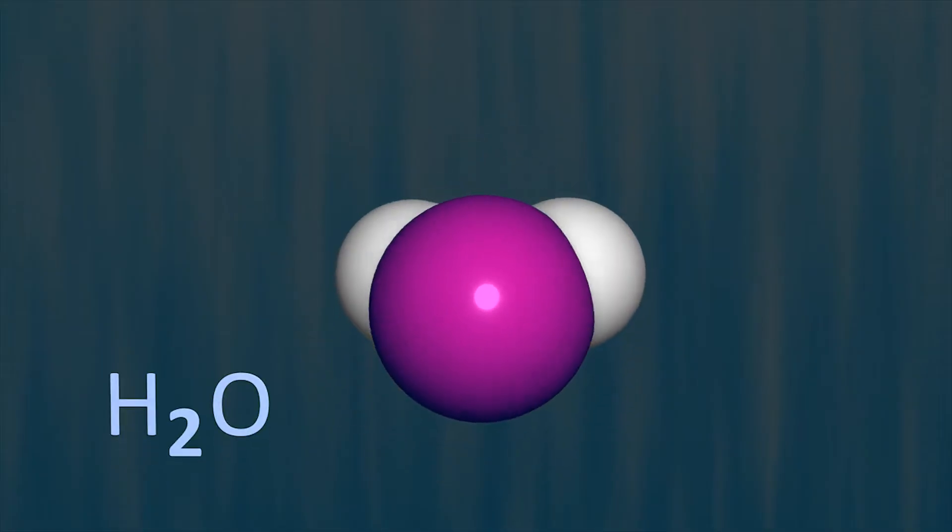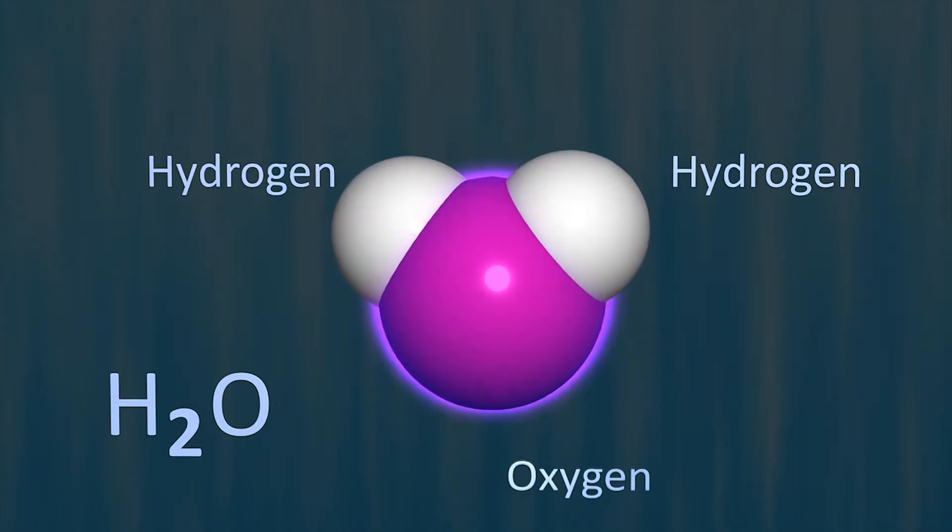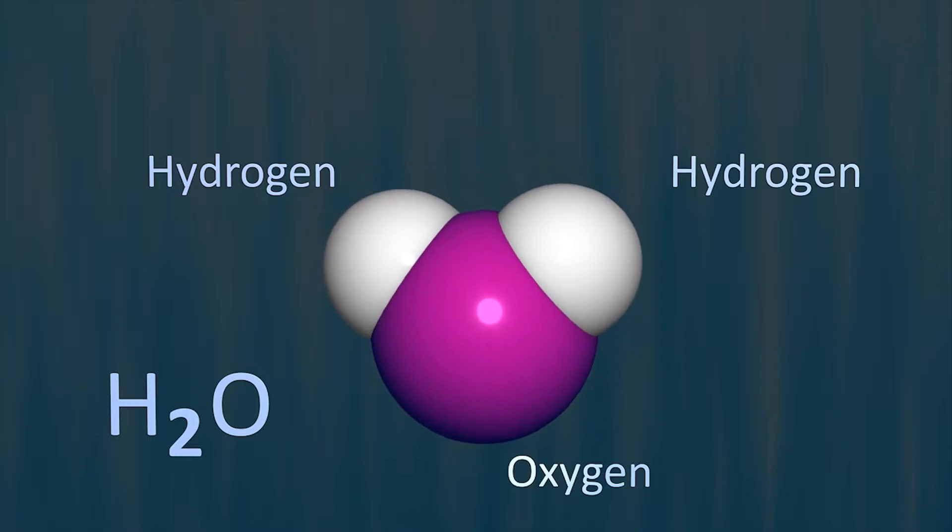A single molecule of water is made up of just three atoms. Two atoms of hydrogen, the most abundant substance in the universe, and one atom of oxygen. Much rarer than hydrogen, but still abundant.